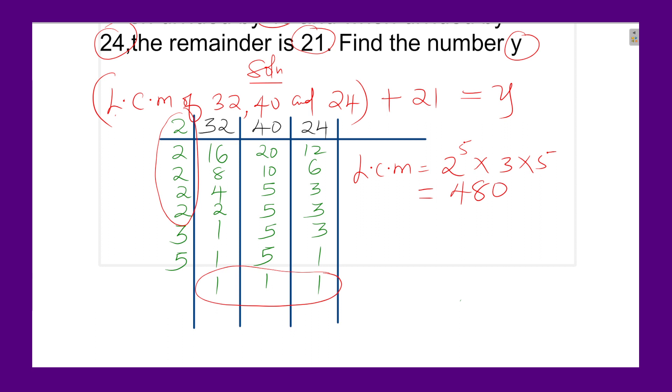Now after getting the LCM, to get number y, that number y is 480 plus the remainder. And this one will give 501. So 501 is the number y.